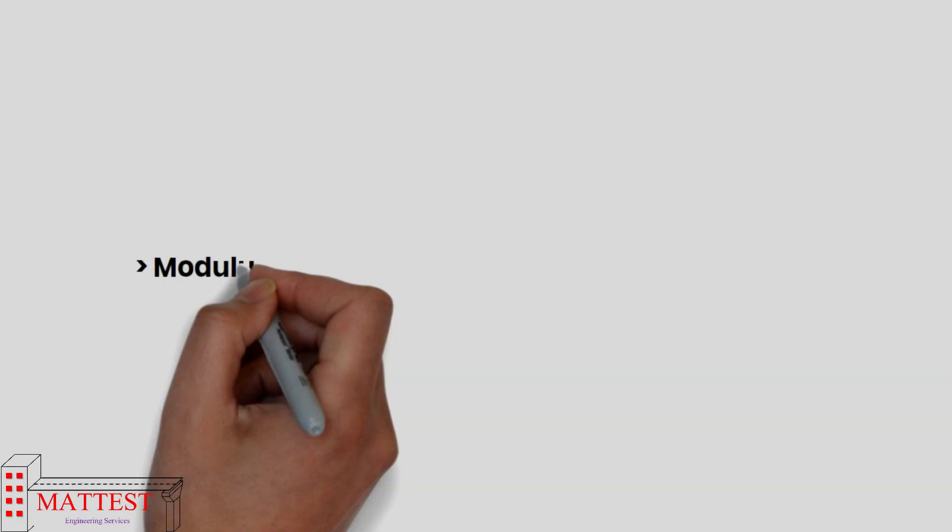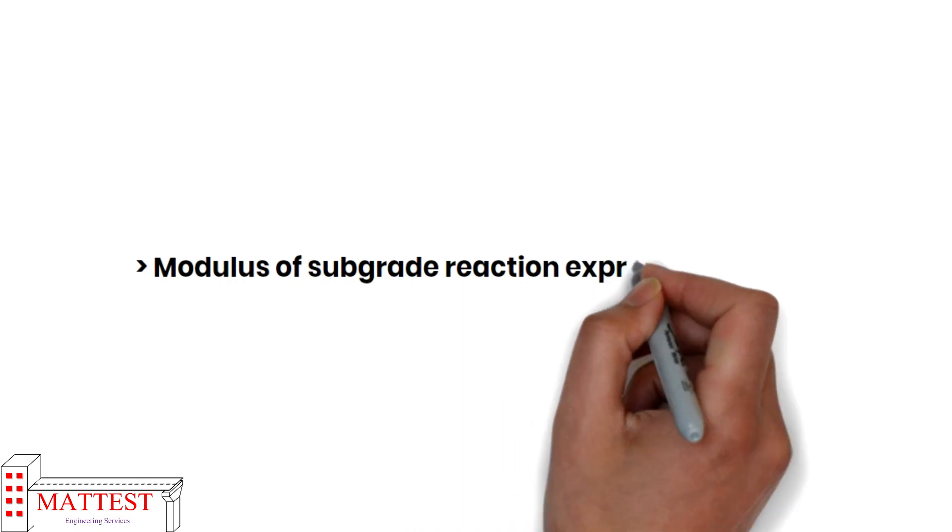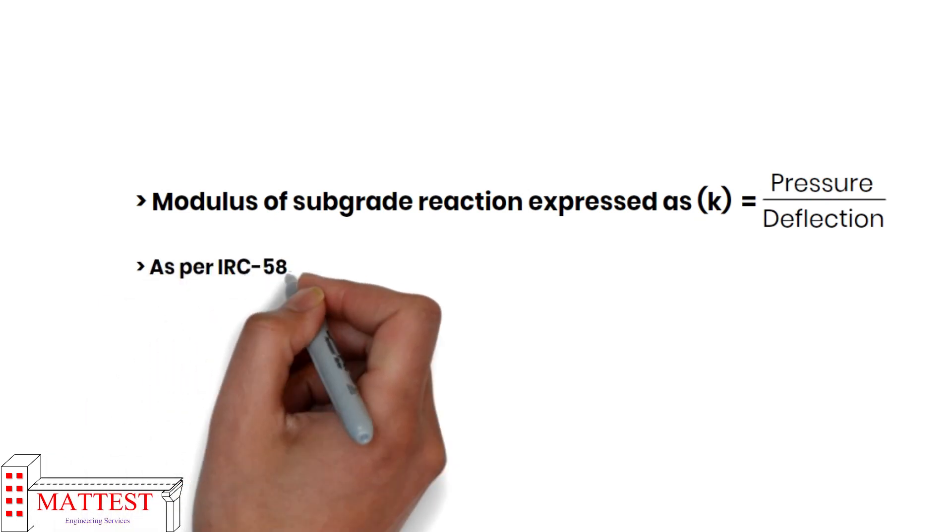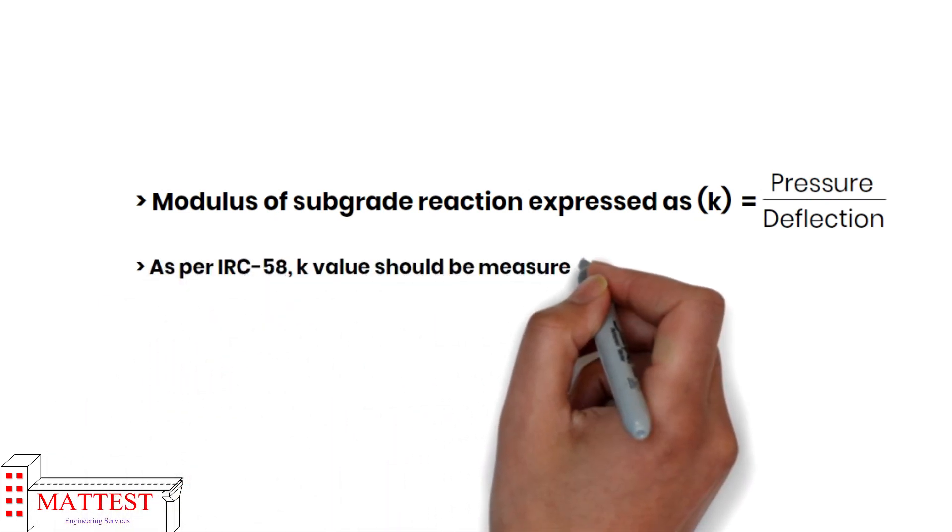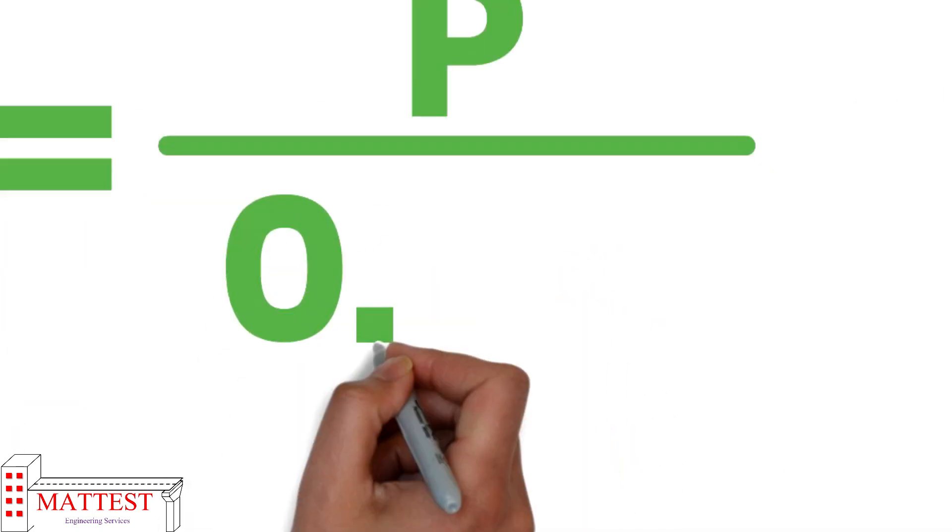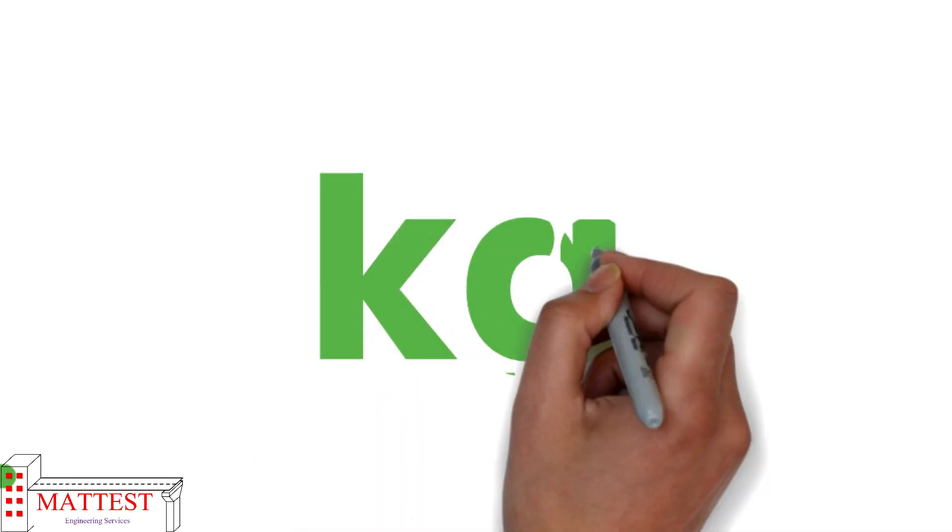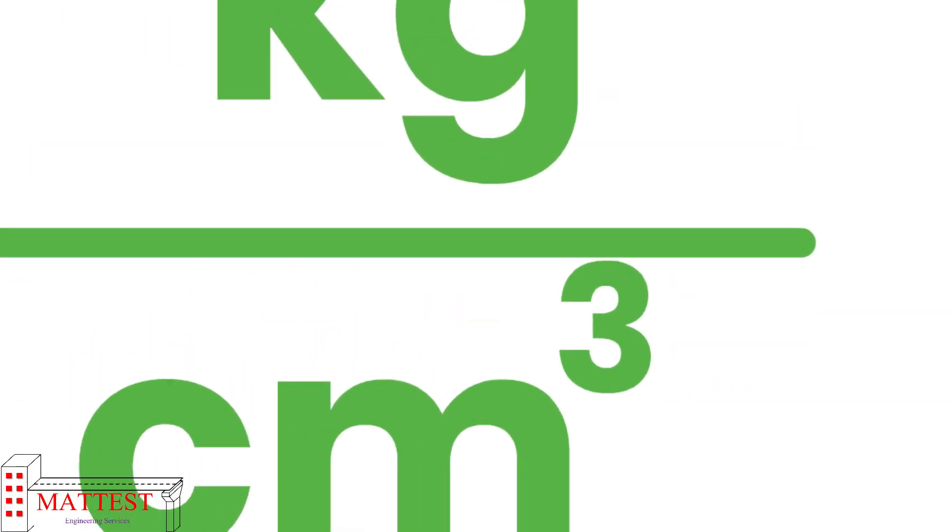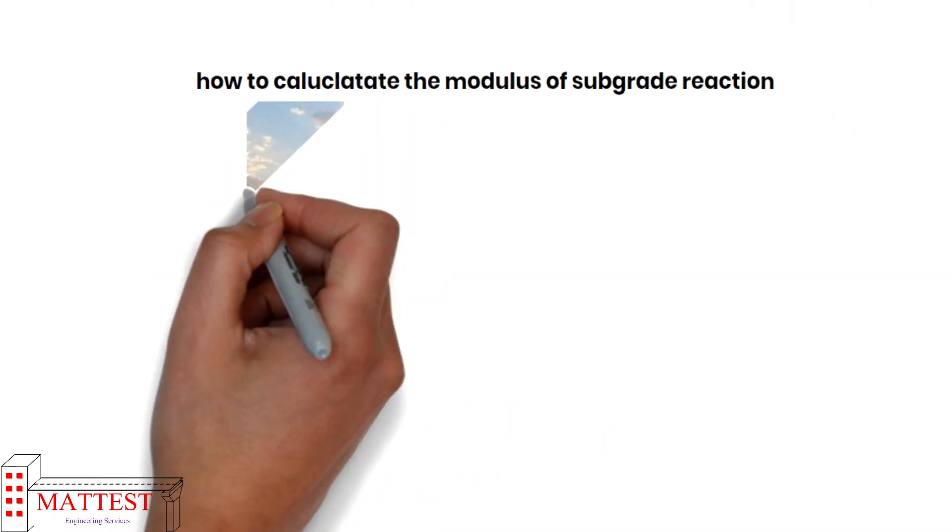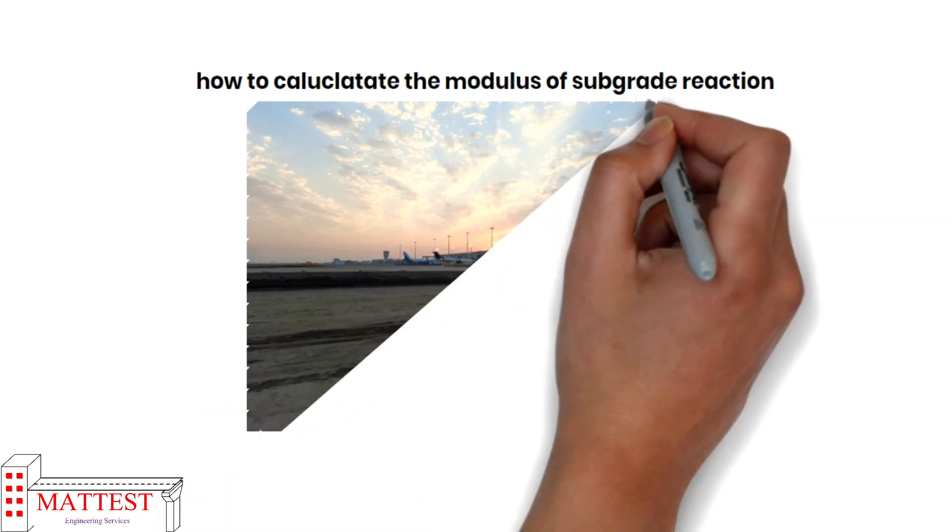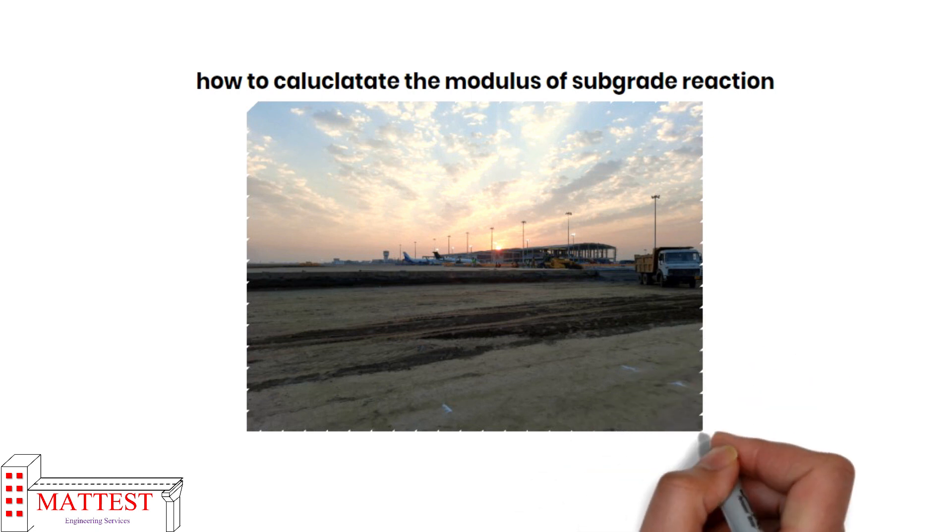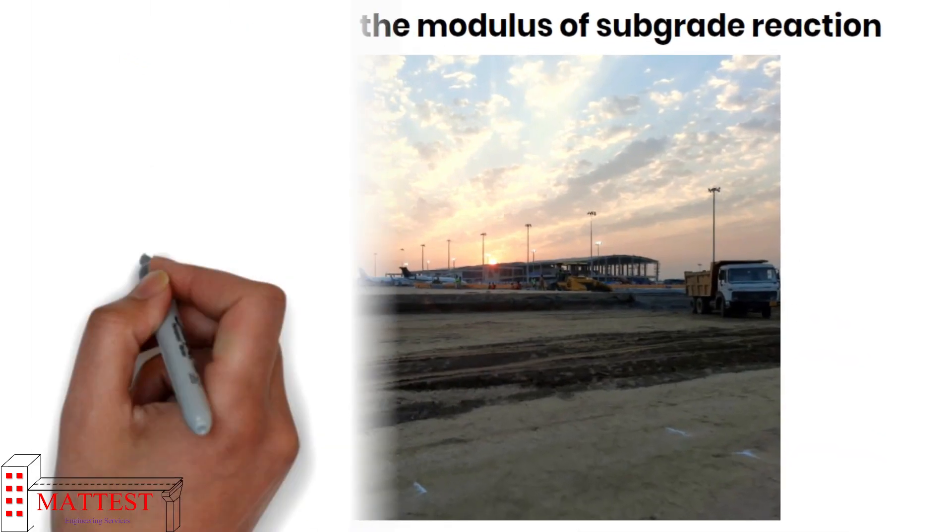Modulus of subgrade reaction is expressed as pressure upon deflection, but for IRC 58, k value should be measured at 1.25 mm settlement. Hence the equation will become k equals p/0.125 and the unit is kilogram per centimeter cube. Now we will see how to calculate the modulus of subgrade reaction. For that, plate load test is conducted on site and the plate load test is originally meant to find the modulus of subgrade reaction for wheel load stresses in the pavement.